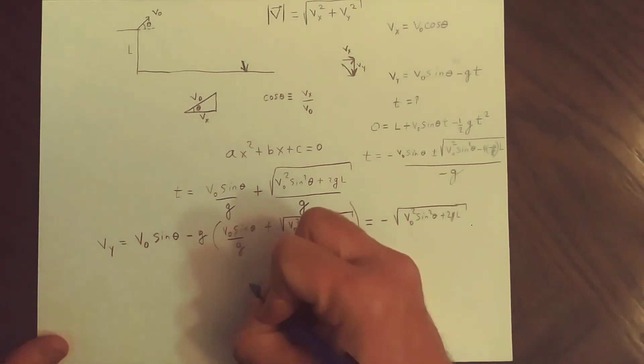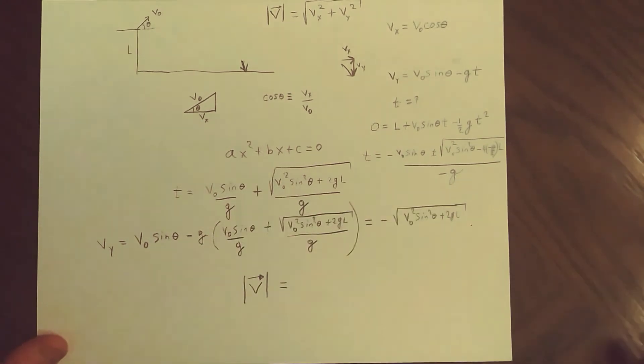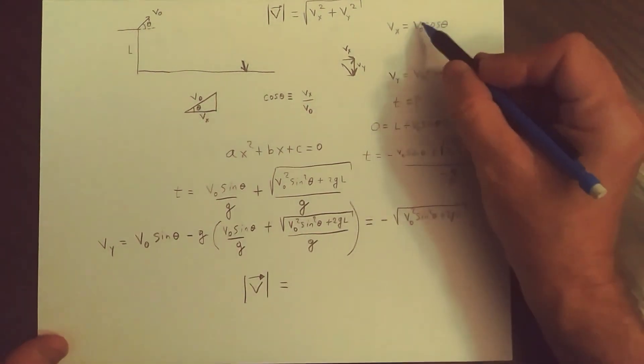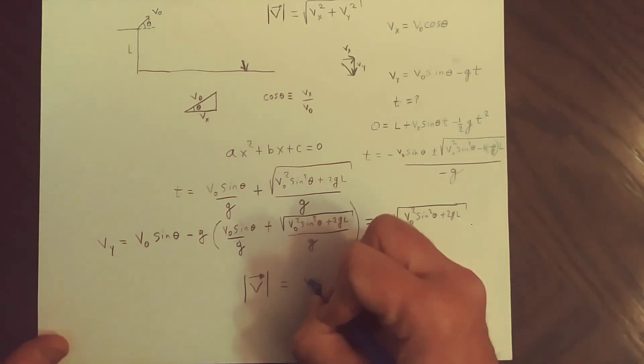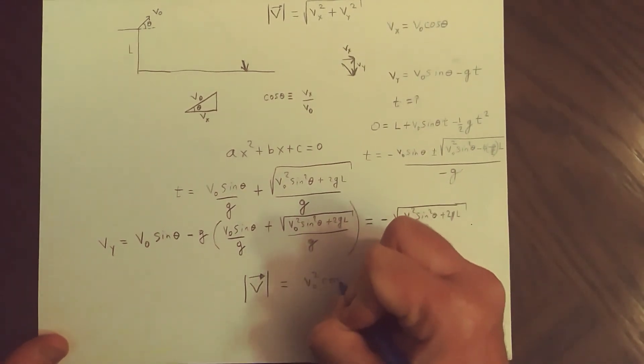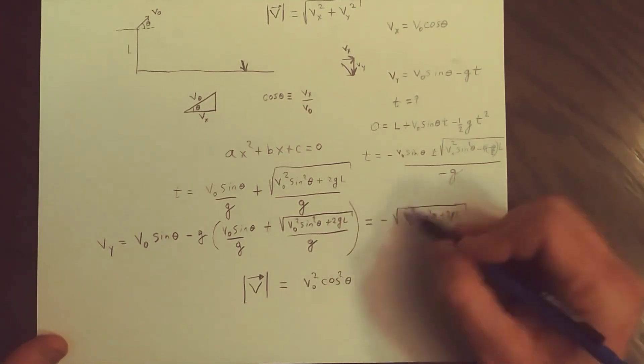So our speed, which is the magnitude of the velocity, has this quantity squared, right? We're looking at this expression. So we get V0 squared cosine squared theta plus this thing squared.